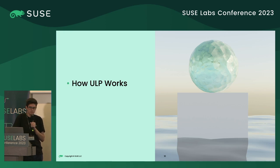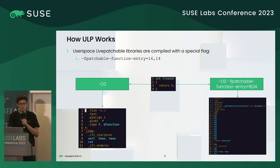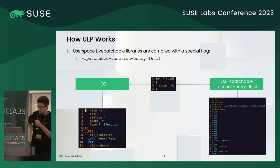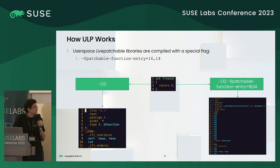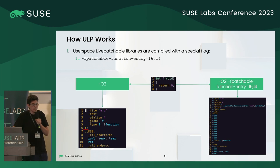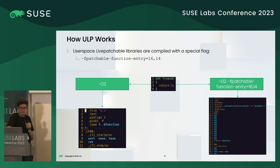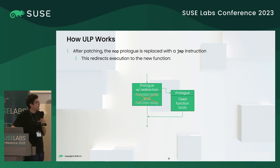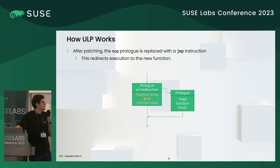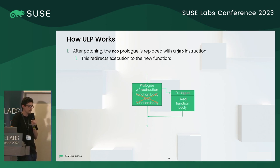Now I will speak about how ULP works. The libraries we ship with livepatching support are compiled with a specific flag. To explain what this flag does: if you compile a function with O2 you get code that zeros out EAX and returns; but if you compile with the patchable-function-entry flag, it generates a series of NOPs. These NOPs create an area where, when we install the livepatch, we insert a jump instruction to redirect execution flow from the old function to a new function that fixes the bug.